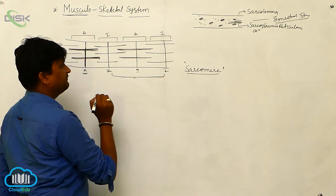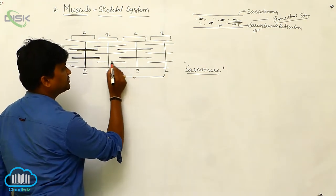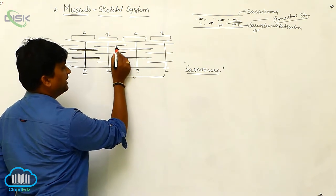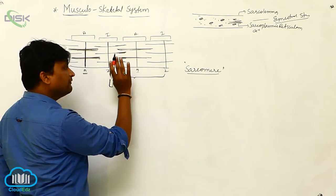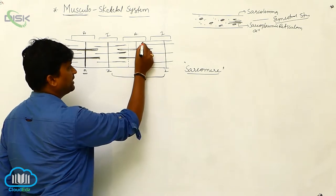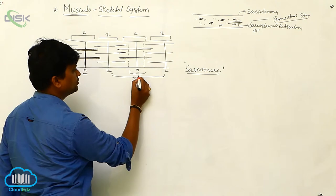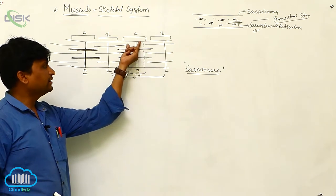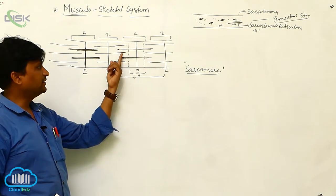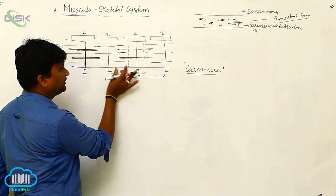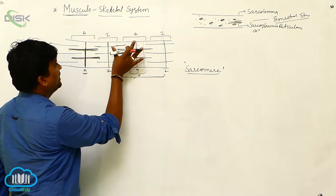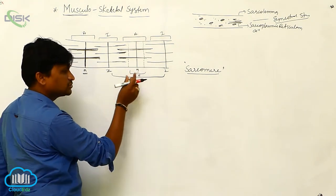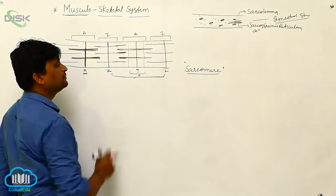In the sarcomere there is a zone where myosin and actin overlap — this is the overlap zone. There is also a zone where only actin molecules are present with no myosin — this we call the H zone. Actually, the H zone is where only myosin filaments are present without actin. The A band is a dark band, and within this dark band the H zone appears as a slightly lighter zone.